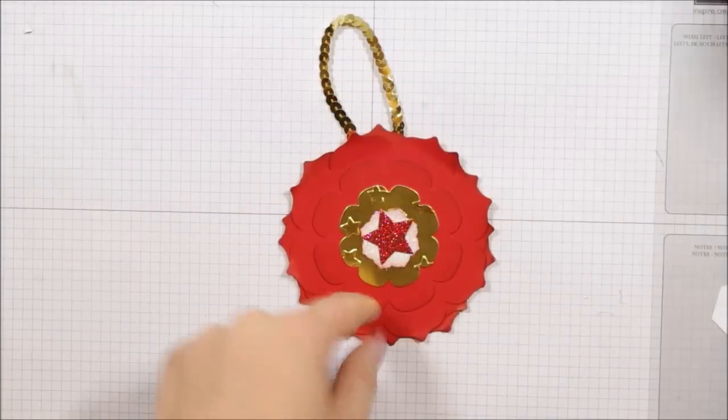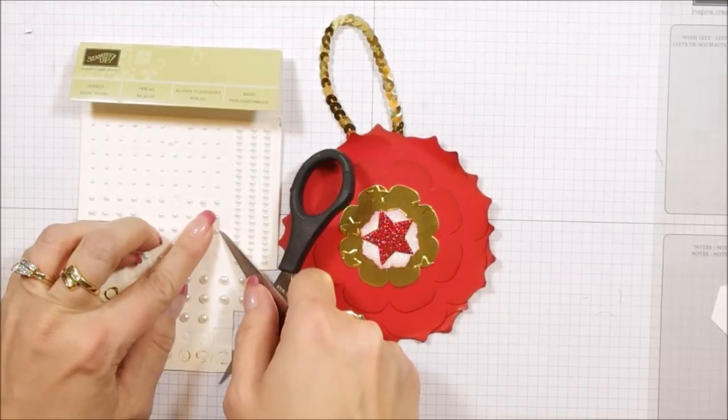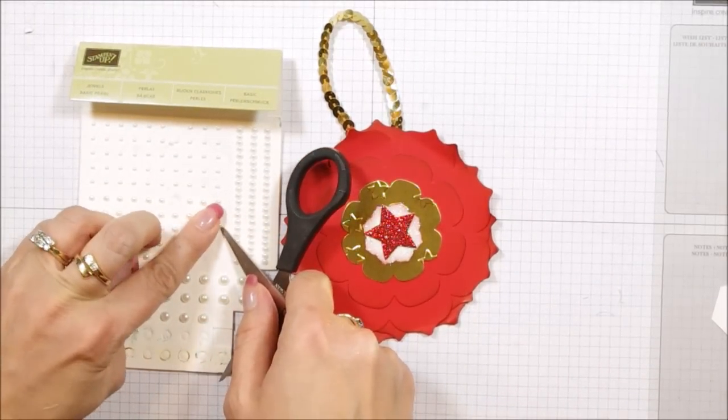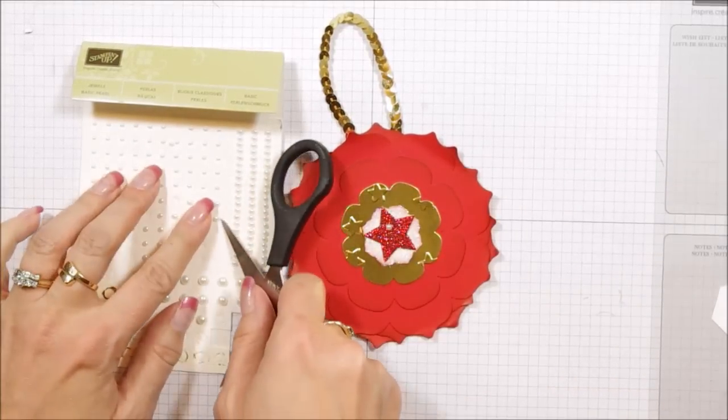So now that we've got all of our curl, we're going to take some of our little basic pearls, and we're just going to put some on top of our little red star, just to make it a little cuter.